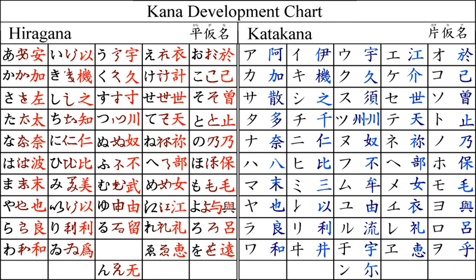Each kana character corresponds to one sound in the Japanese language. This is always CV (consonant onset with vowel nucleus), such as ka, ki, etc., or V (vowel alone), such as a, i, etc., with the sole exception of the grapheme for nasal codas, usually romanized as n.